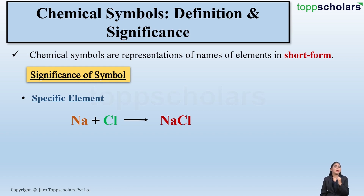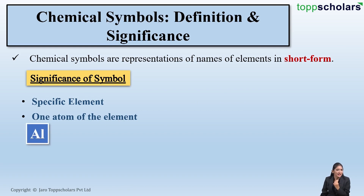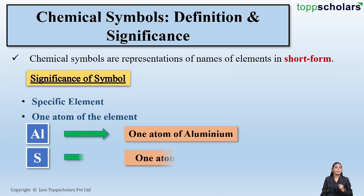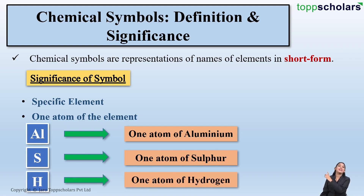These chemical symbols also help us to represent one atom of the element. That is, Al — the symbol Al represents one atom of aluminium. The symbol S represents one atom of sulphur, and the symbol H represents one atom of hydrogen.